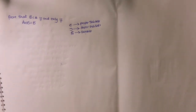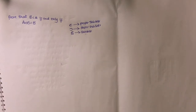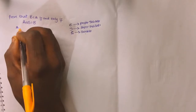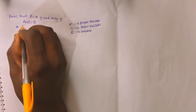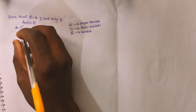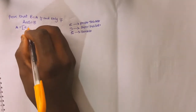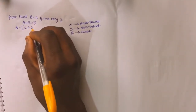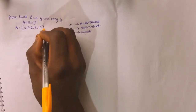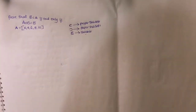So looking at this, I'm asked to show that B is a proper subset of A. The first step is very simple — I need to take an example. So I'll say: let A equal the set of all even numbers — let's say A equals {2, 4, 6, 8, 10}.